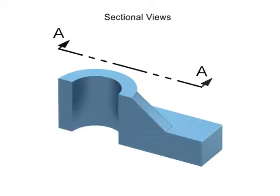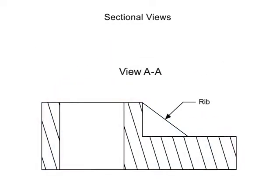Once an object is sectioned, pattern lines called section lines are added to indicate the remaining material. Only the material that has been cut or sectioned is given patterned section lines.